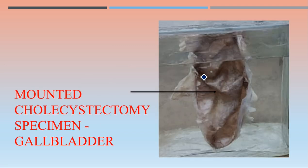The fifth specimen is a mounted cholecystectomy specimen - a mounted specimen of the gallbladder. The walls are very thin - a thin-walled gallbladder. A patient requiring cholecystectomy usually presents with right hypochondrium or epigastric pain, tenderness, vomiting, and nausea. On ultrasound there will be presence of acoustic shadows inside the gallbladder. The treatment is obviously cholecystectomy.